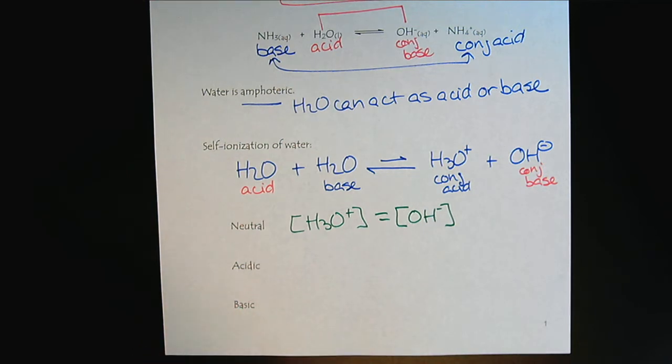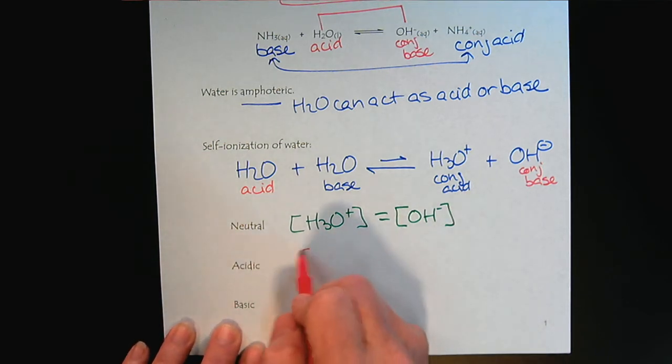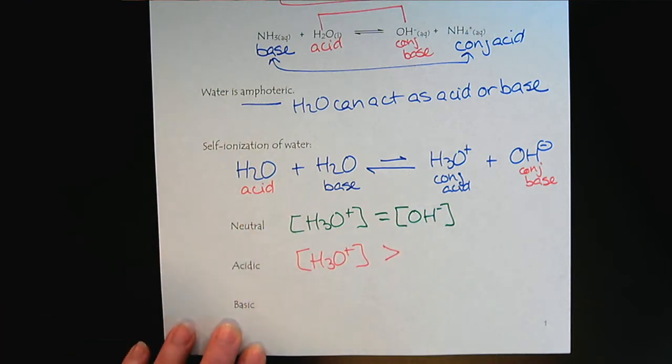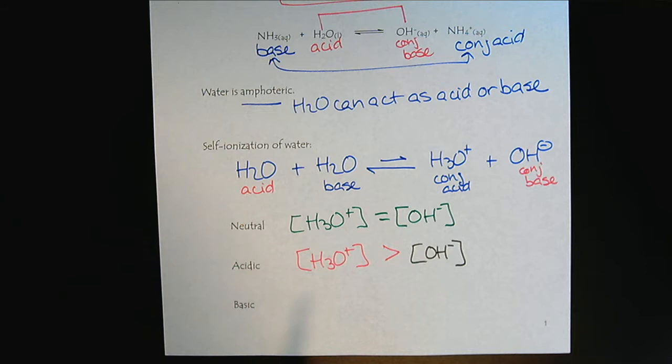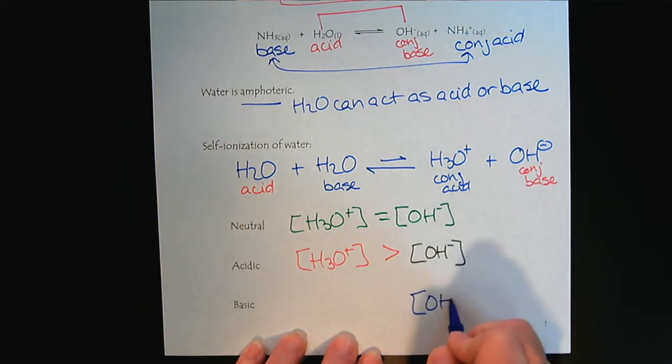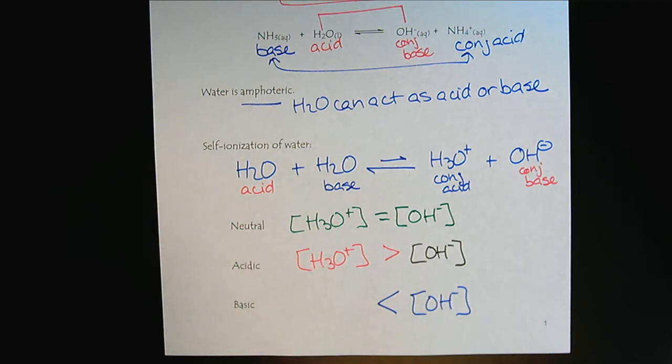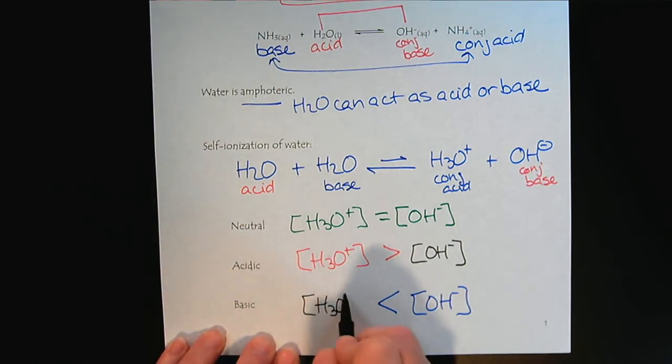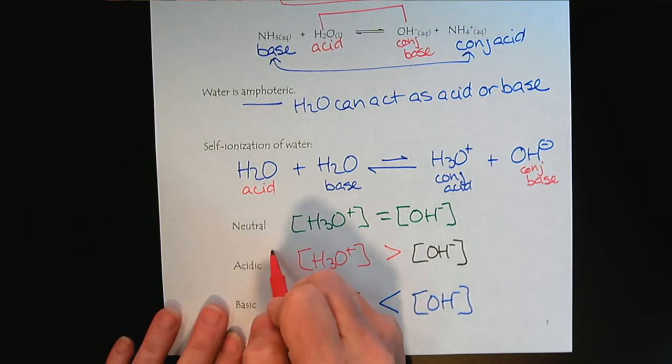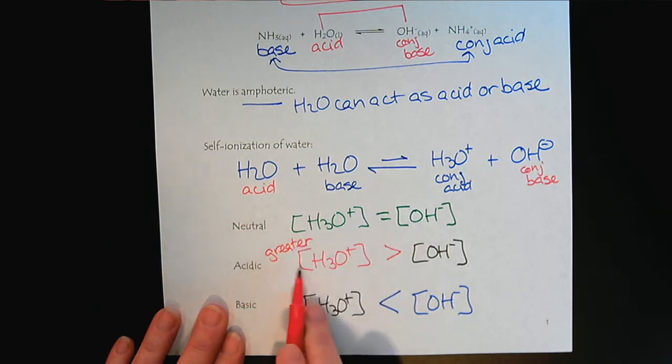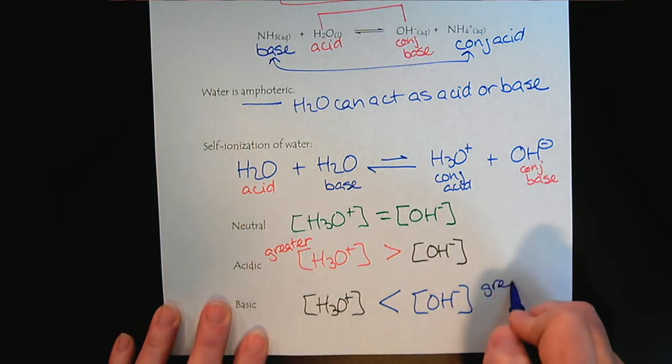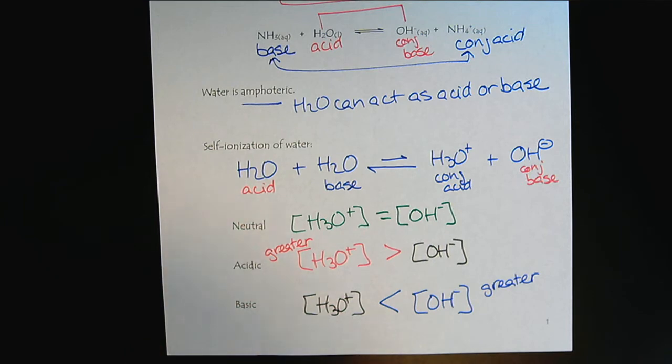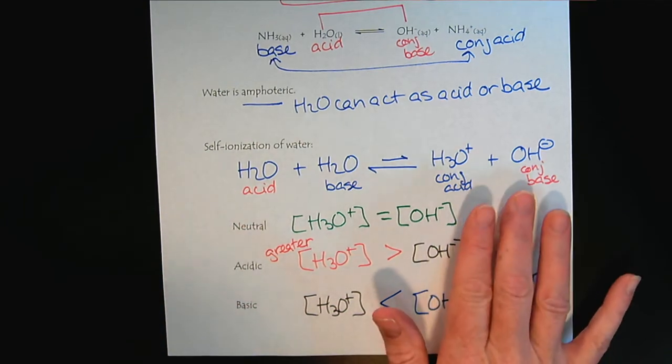In an acidic solution, we are going to say that there is a higher concentration of hydronium than the hydroxide. And in a basic solution, we will say that the base has a higher concentration than the hydronium. So you've got to know your greater and less than. So this is greater. So an acidic solution has a greater concentration of the hydronium ions. And a basic solution has a greater concentration of hydroxide. And we understand that in water, we will always have a mix of both.